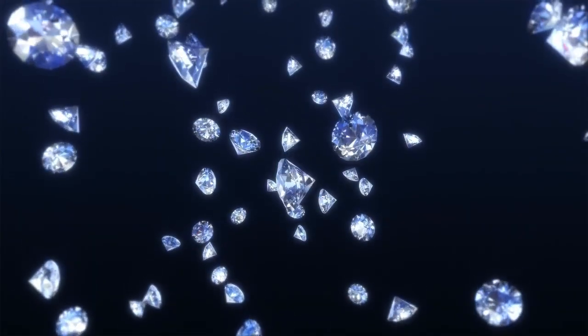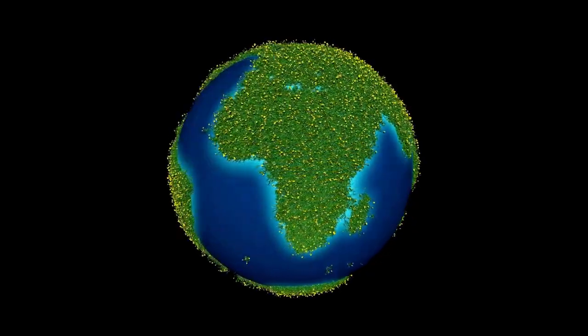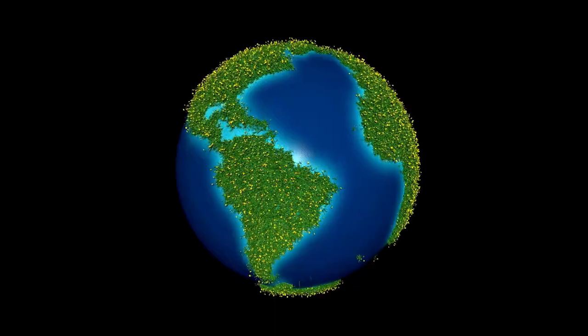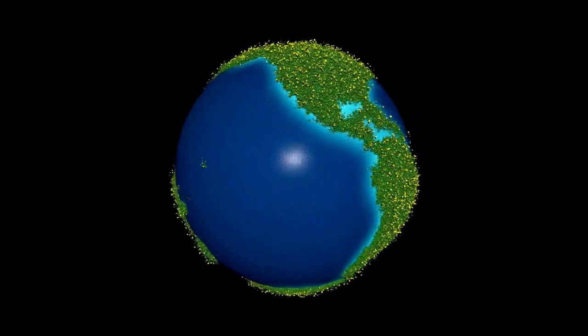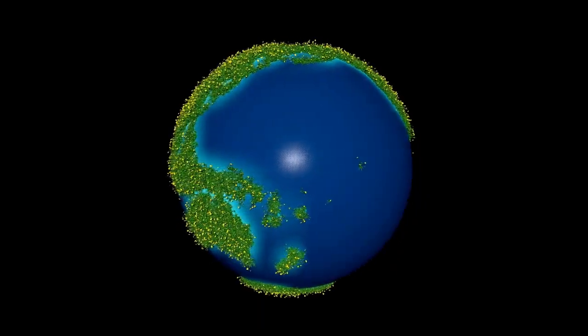What makes K2-18b particularly compelling is that it falls within its star's habitable zone, the region where temperatures may allow liquid water to exist, given the right atmospheric conditions. But unlike Earth, this exoplanet occupies a category scientists refer to as a sub-Neptune. It is larger than Earth but smaller than Neptune, a classification that challenges our existing frameworks for understanding planetary environments.